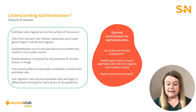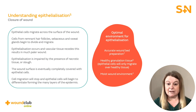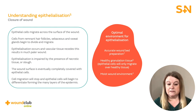Epithelialisation is the last phase of healing which leads to wound closure. Epithelial cells, which are located in hair follicles, sweat glands and around the edges of the wound, divide and migrate over the newly formed granulation tissue. The wound surface will eventually be covered with epithelial cells. Cell migration then stops and the epithelial cells begin to form the many layers of the epidermis. It is important to remember that an optimal wound healing environment is needed for this process. Epithelialisation will not take place where there is necrotic tissue or slough present, so accurate wound bed preparation would need to take place.